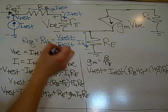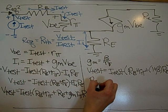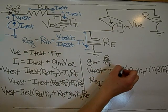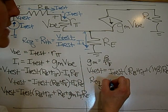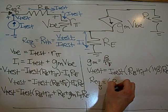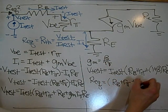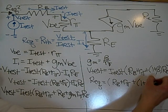Now taking this V-test and finding the R equivalent is going to be V-test divided by I-test, which will cancel out this I-test. So it leaves it with Rb plus R-pi plus 1 plus beta Re.